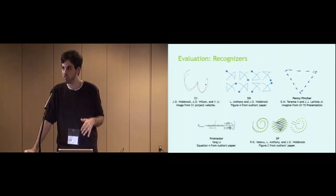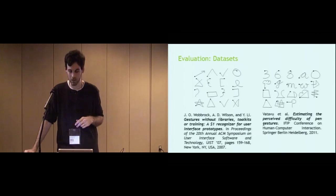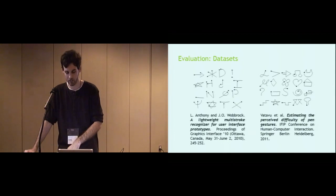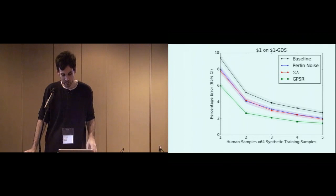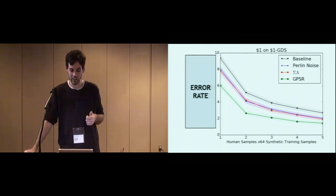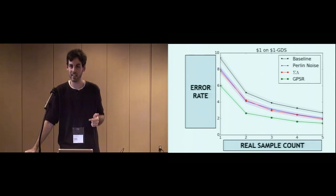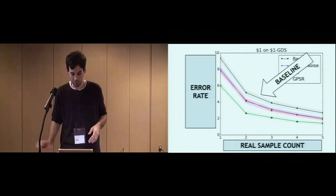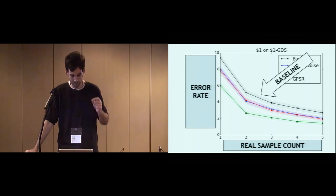We tested mostly on rapid prototyping recognizers, mostly dollar family to be specific, and we tested on four publicly available data sets. Three of them were unistroke. One was a multistroke. And we mostly get results. They all look like this. The y-axis is the error rate. Obviously, lower is better. The x-axis is the real sample count, so the number of real samples provided is part of the test. And then the top line is our baseline recognition error rate. That's the recognizer trained with only real data. The other three are the same recognizer trained with synthetic data.